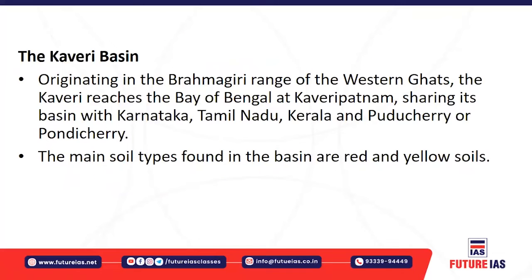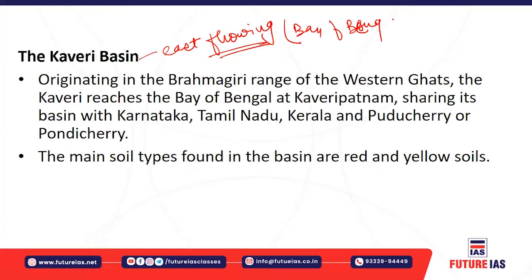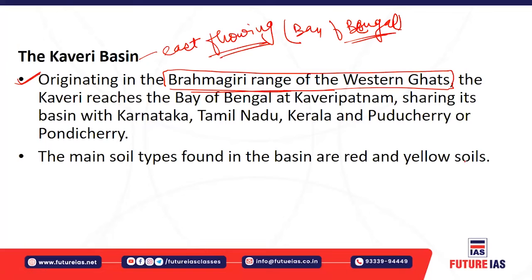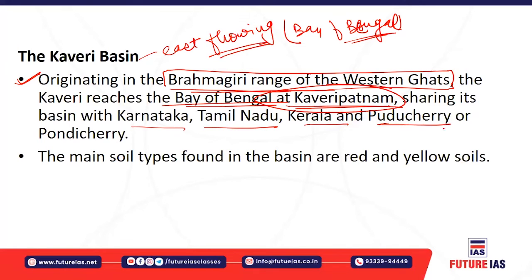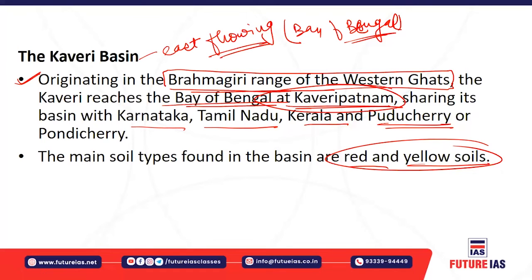Kaveri is also an important east-flowing river that originates in the Brahmagiri range of the Western Ghats and reaches the Bay of Bengal at Kaveripatnam. Its basin is shared by Karnataka, Tamil Nadu, Kerala, and Pondicherry. The main soil found in the Kaveri basin is red and yellow soil, especially in the Tamil Nadu and Kerala regions.